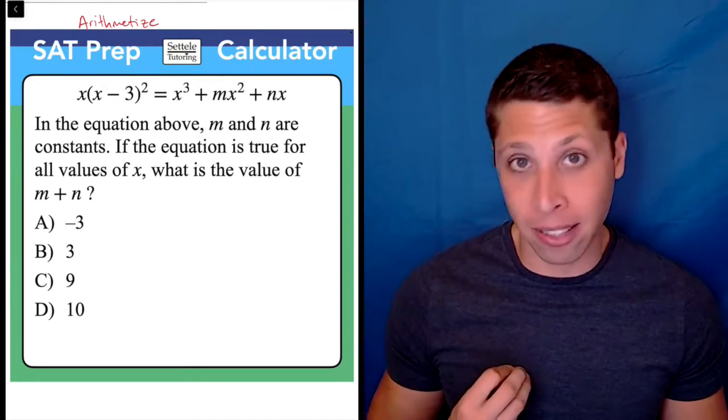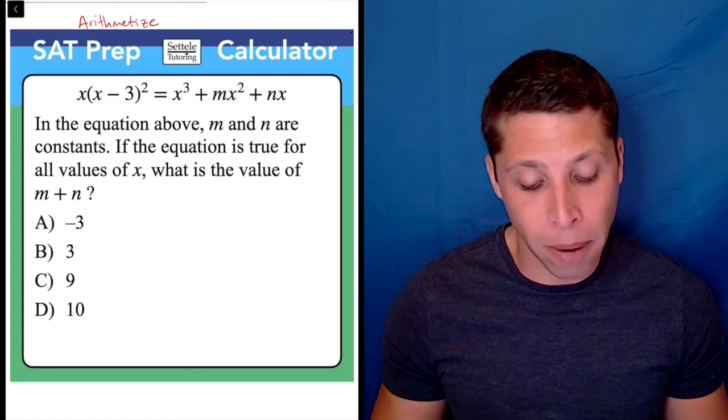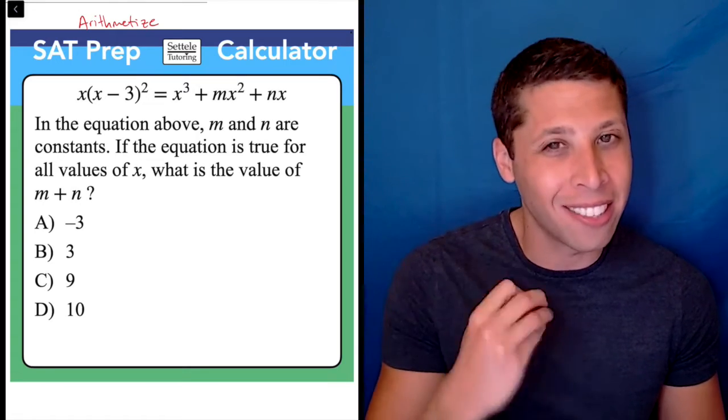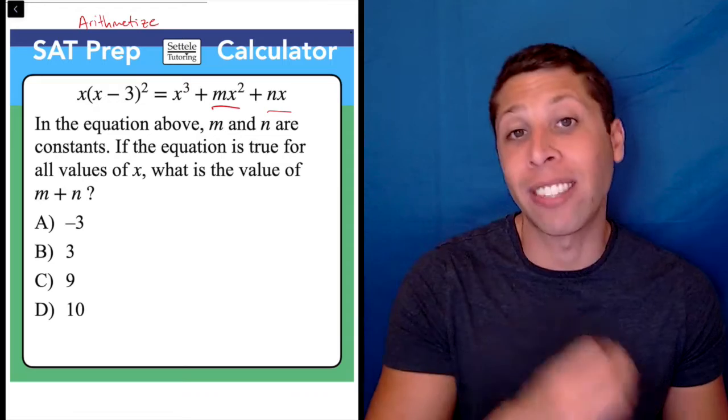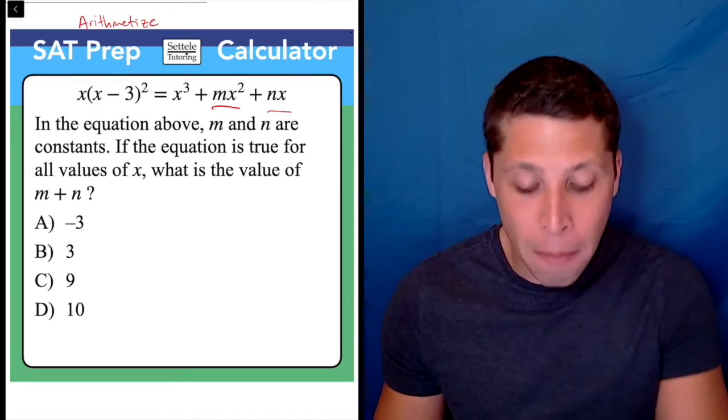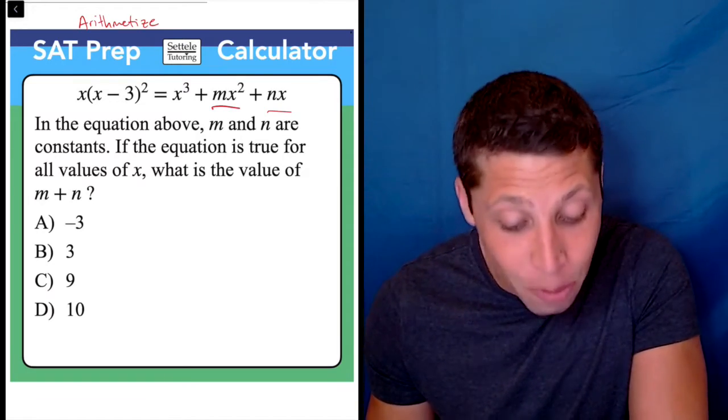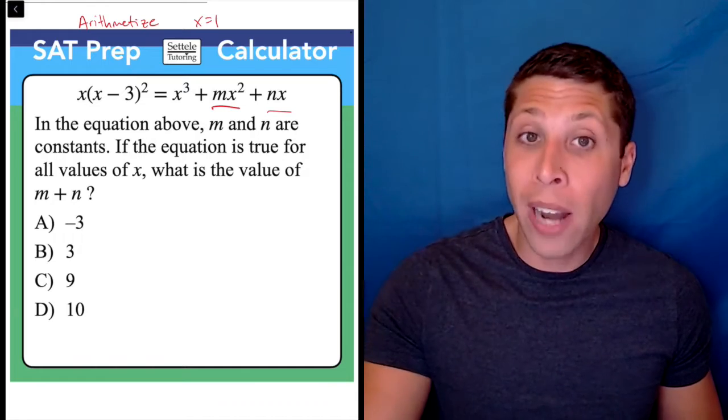I would love to pick x = 0 because that's my go-to number, but it doesn't work here because if I make x zero, I'm going to lose the m and n that are attached to it. So I can't do that. But I can do the next best thing, which is x = 1. So what happens if I do that?